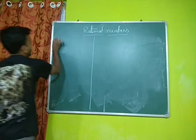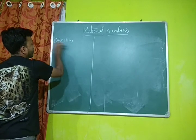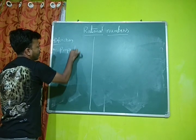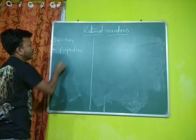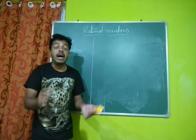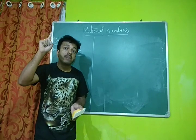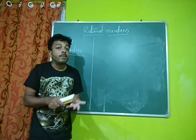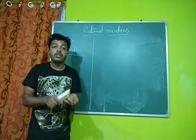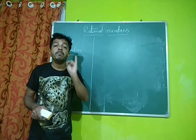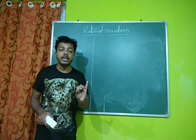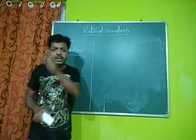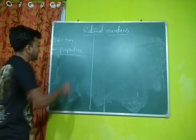So what we discussed is: first, the definition. Next, some properties. We can discuss properties. Already we learned some properties in whole number and natural number chapters in 7th and 6th standard. The properties are: closure property, commutative property, associative property, distributive property — these are the four main basic properties. Apart from these, two more concepts are identity and inverse. We can apply these same properties to rational numbers.